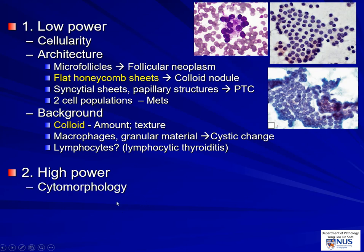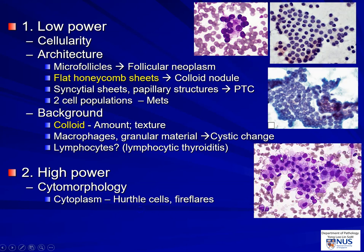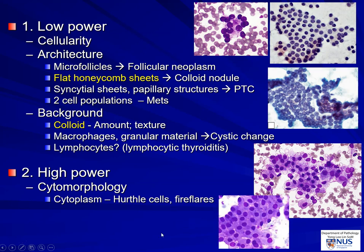On high magnification, we really want to focus on the cells themselves. In terms of cytoplasm, we can have cells with fire flares, which usually indicate metabolically active cells — they can be seen in neoplasms as well as in non-neoplastic nodules and Hürthle cells. And of course the nuclear features, specifically for PTC, medullary, and also very pleomorphic bizarre nuclei in anaplastic carcinoma.